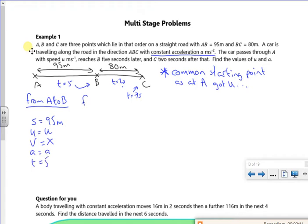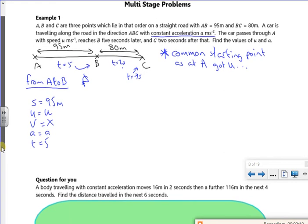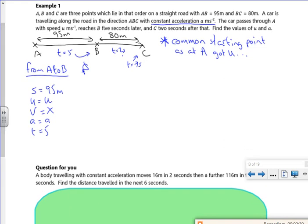From A to C, oh hang on, let's make an equation for interaction. So without using V, so S equals ut plus a half at squared, so I've got 95 is u times five plus a half a times five squared.